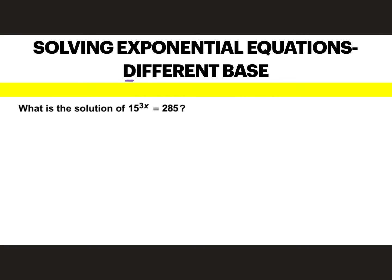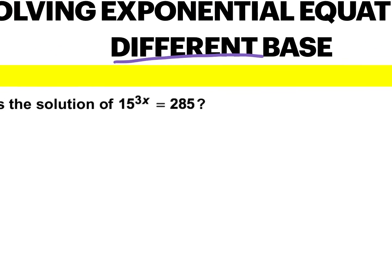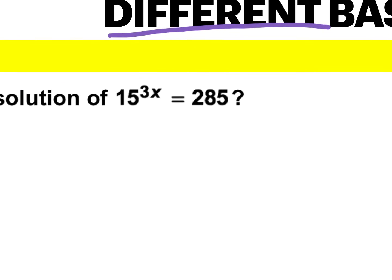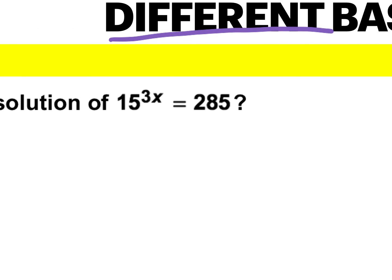Next we have different bases. If we can't have the same base, do we do the same thing? No — we have to do something else. I can't break 15 down to be like 2 to some exponent or 3 to some exponent — it just doesn't work. We don't have two of the same numbers that multiply to give us 15. Same thing with 285 — I can't break it down or make it a power of 15.